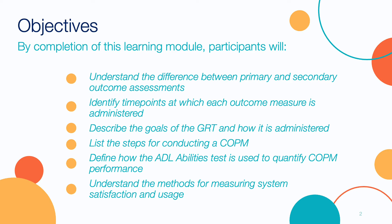By completion of this learning module, participants will understand the difference between primary and secondary outcome assessments, identify time points at which each outcome measure is administered, describe the goals of the GRT and how it is administered, list the steps for conducting a COPM, define how the ADL Abilities Test is used to quantify COPM performance, and understand the methods for measuring system satisfaction and usage.